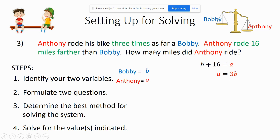I also know that Anthony rode three times as far, so I could write that as 3B. So here I have two different things. So I have two equations.